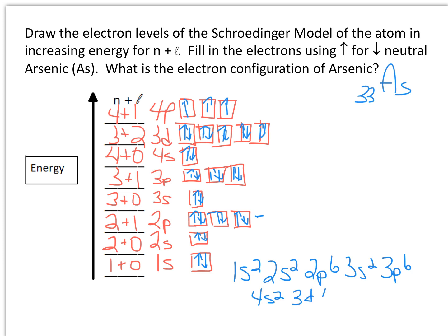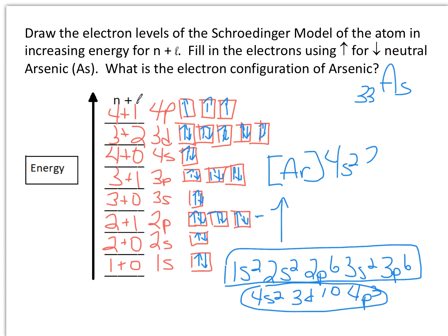4s2, 3d10, and 4p3. I have now accounted for all 33 electrons. Of course there's an easier way to write this. This set right here actually represents argon. So I could write this more simply as all argon, and then work on my remaining ones that are outside the noble gas core as 4s2, 3d10, 4p3.